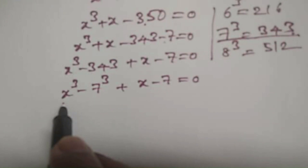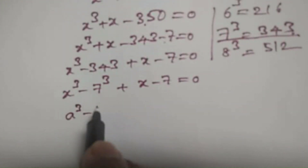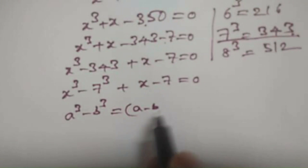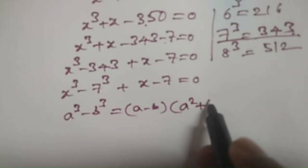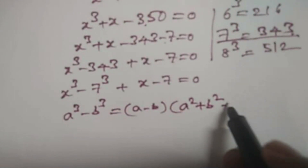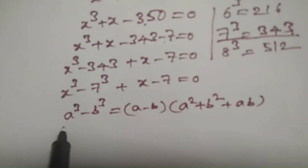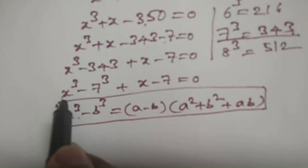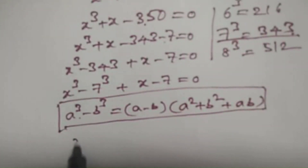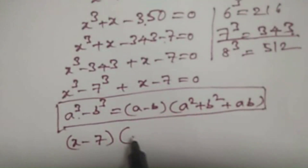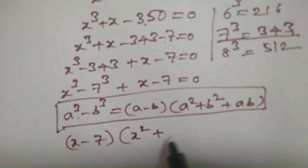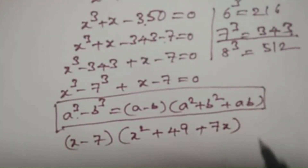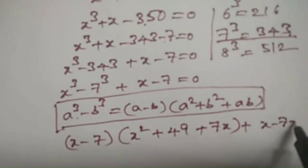This is of the form a cubed minus b cubed, which is equal to a minus b, into a squared plus b squared plus ab. Applying this formula to x cubed minus 7 cubed gives x minus 7, into x squared plus 49 plus 7x, plus x minus 7 is equal to 0.